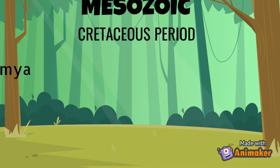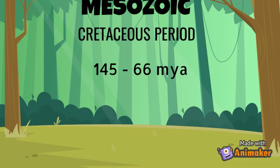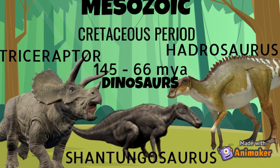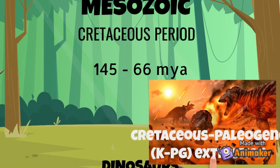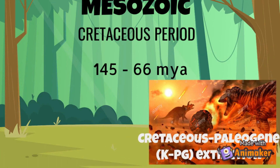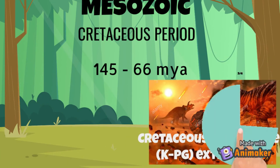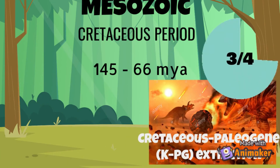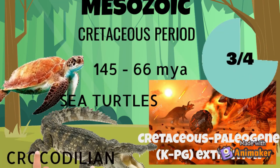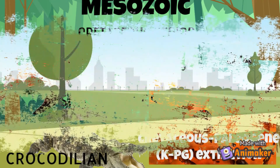Lastly, the Cretaceous period began 145.0 million years ago and ended 66 million years ago. Dinosaurs were the dominant group of land animals, especially duck-billed dinosaurs and horned forms. The Cretaceous-Paleogene extinction event was a sudden mass extinction of three-quarters of the plant and animal species on Earth, with the exception of some ectothermic species.